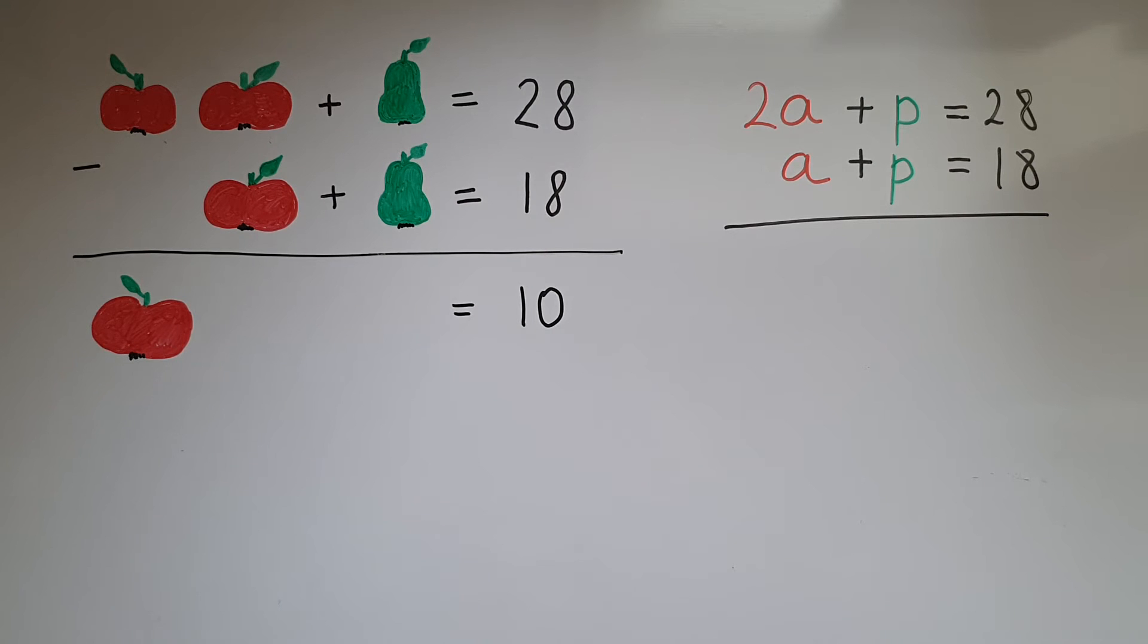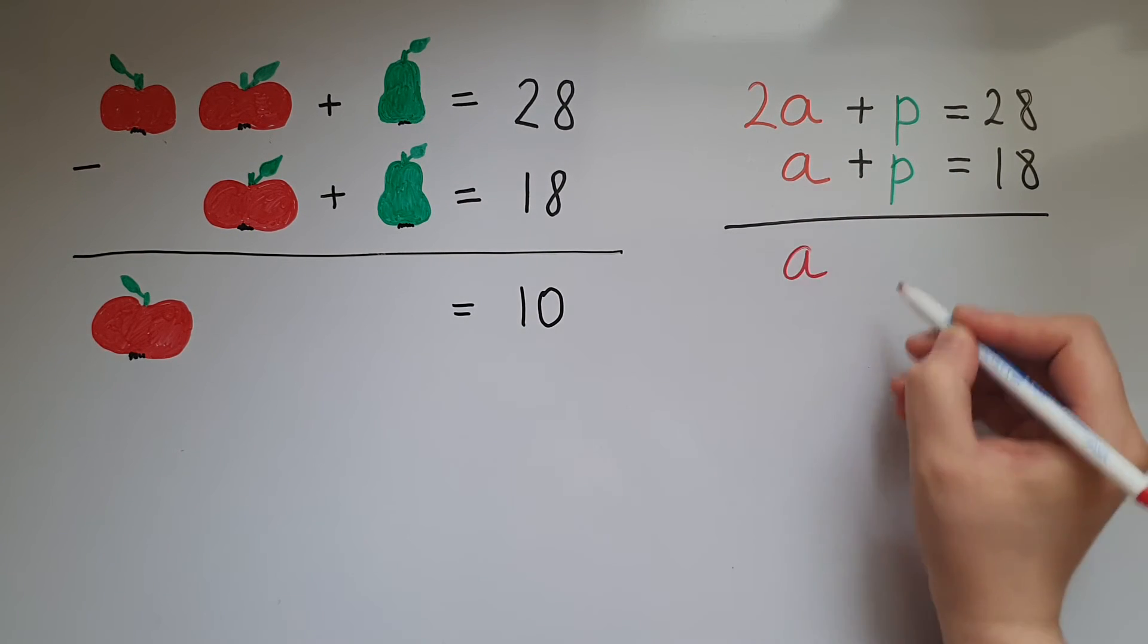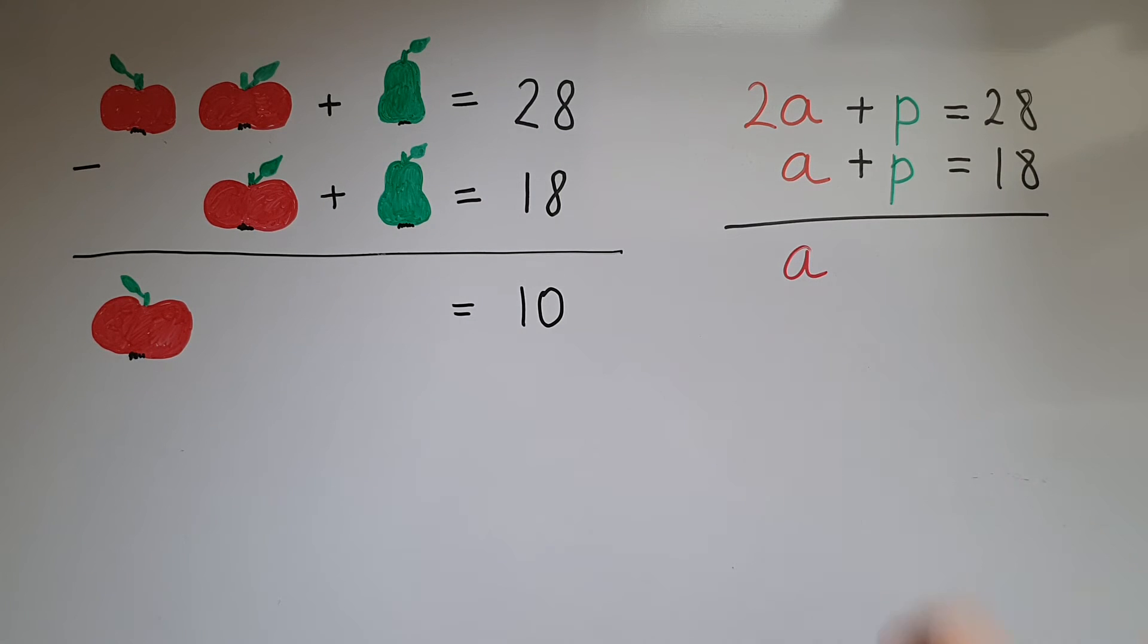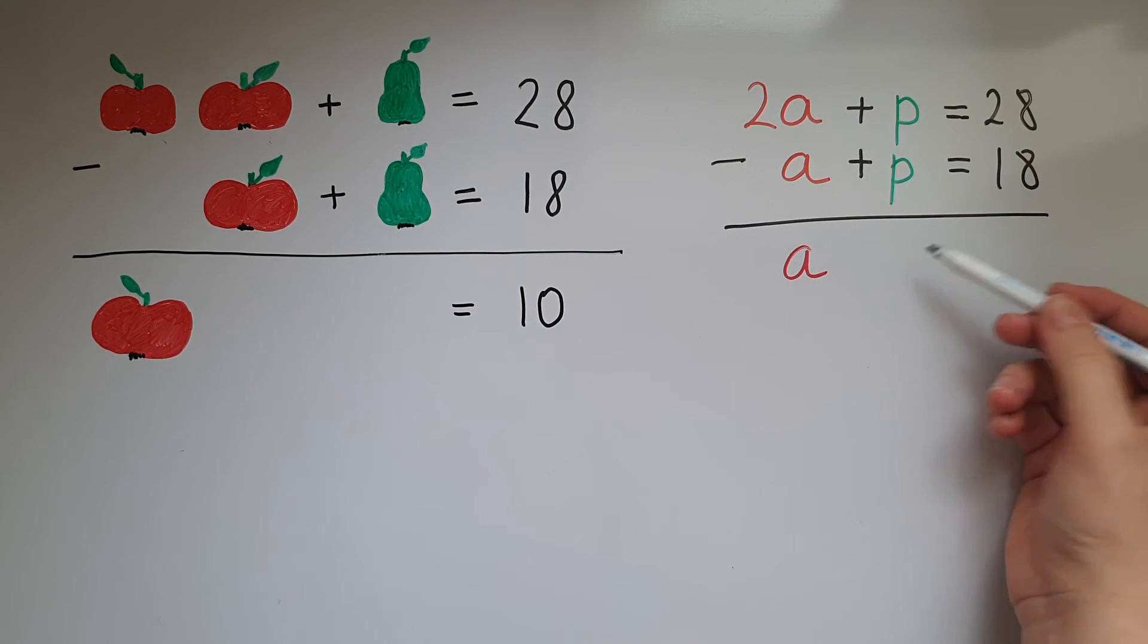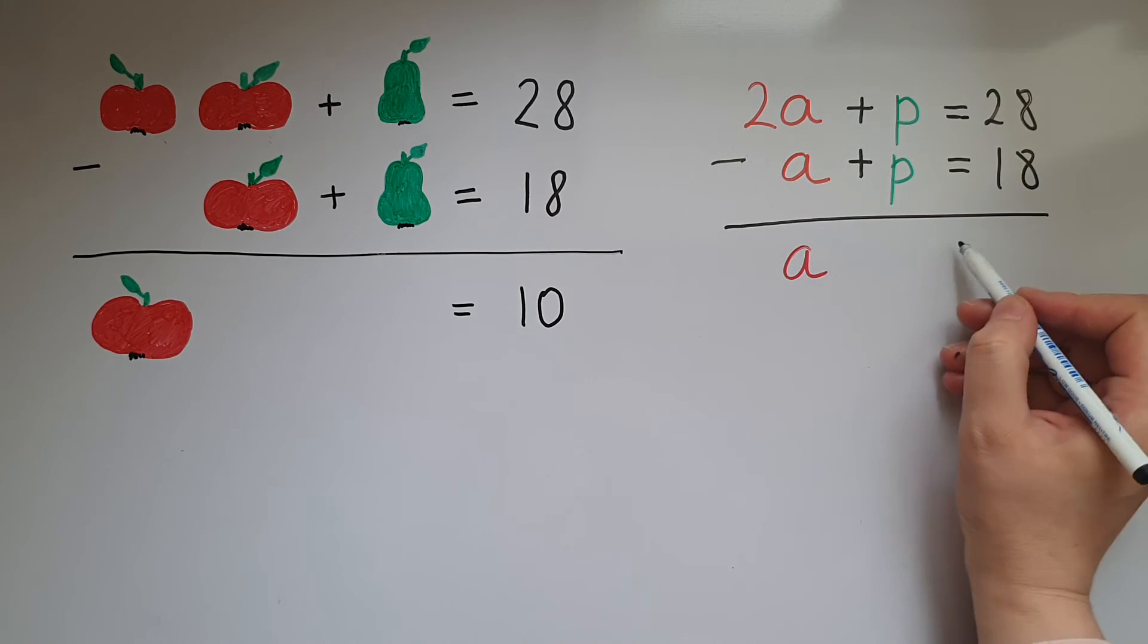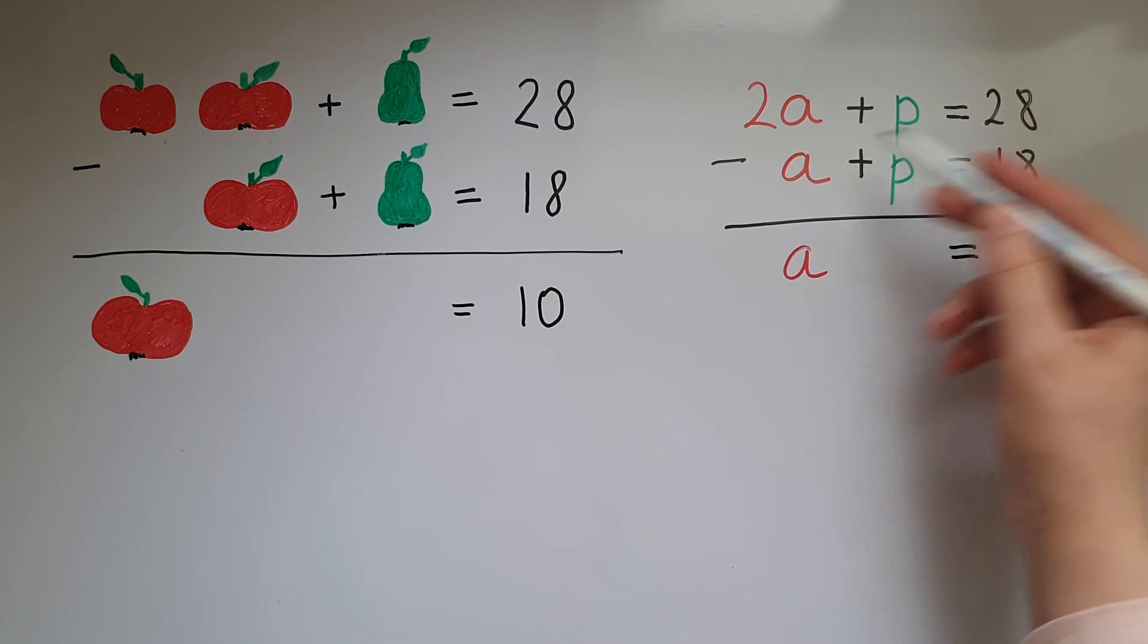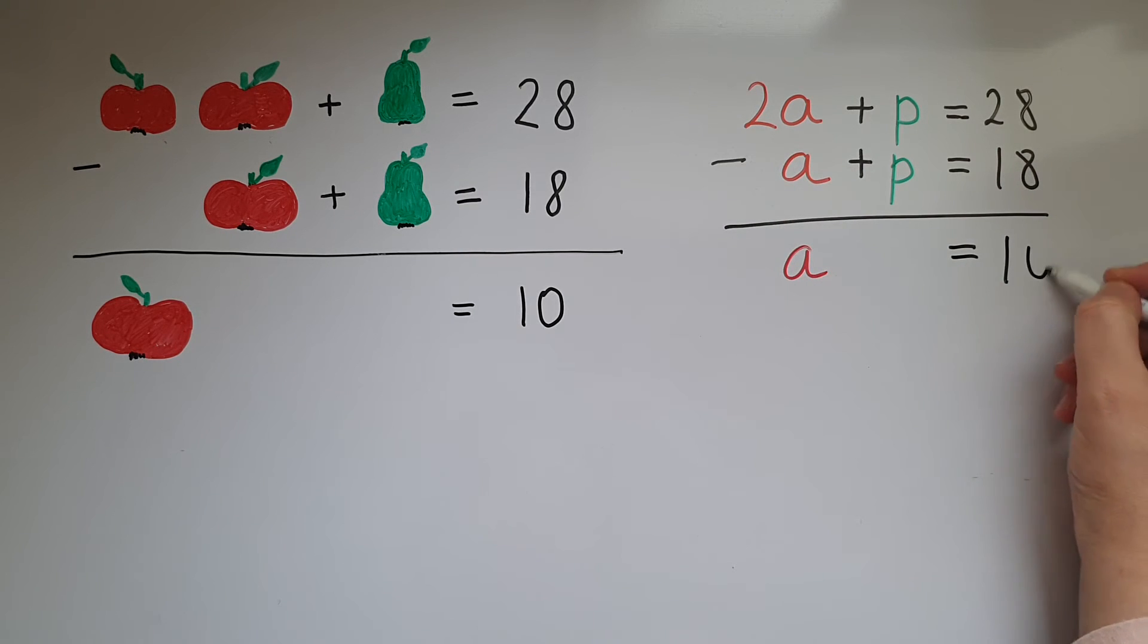So again, 2a take away 1a leaves me with 1a. And p take away p leaves me with 0, which I don't need to write at all. So 28 take away 18 leaves me with 10.